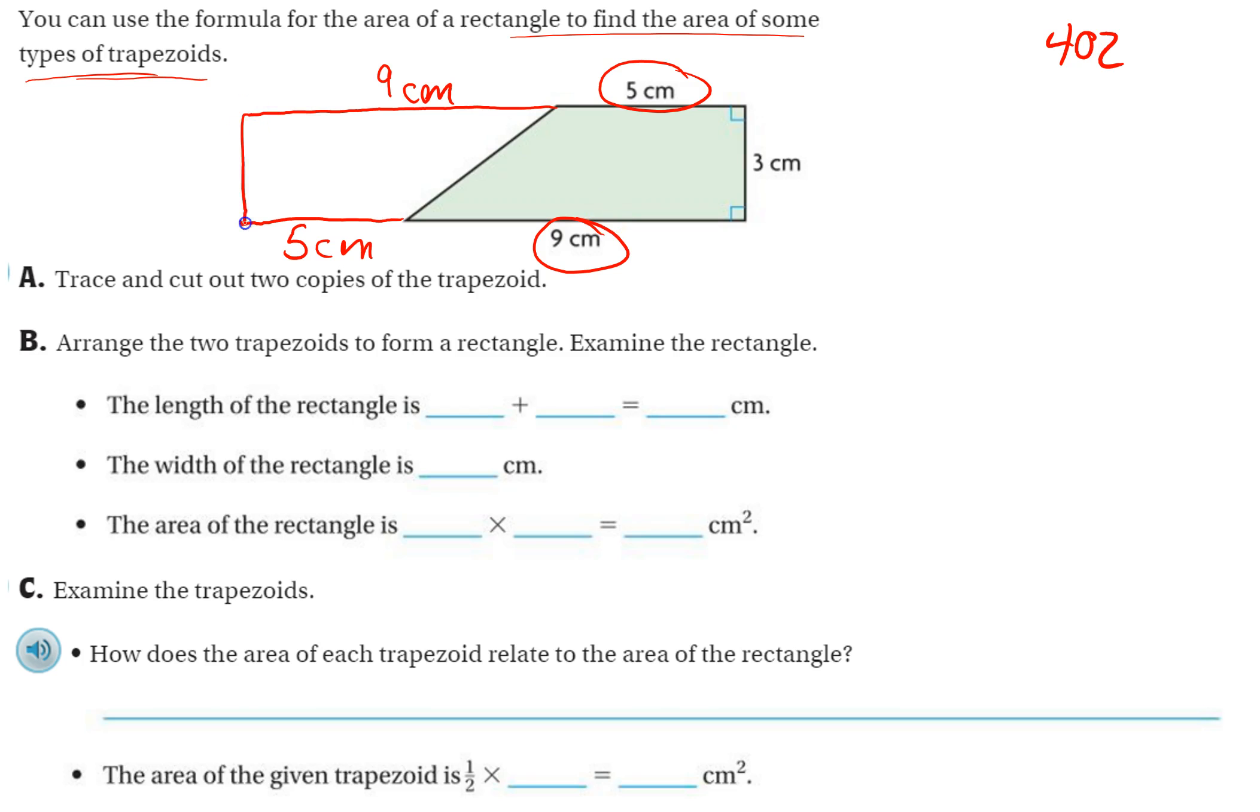And I'm essentially just flipping this trapezoid over, just flipping it over, and so this is still 3 centimeters. Arrange the two trapezoids to form a rectangle. Well, now we have a rectangle.